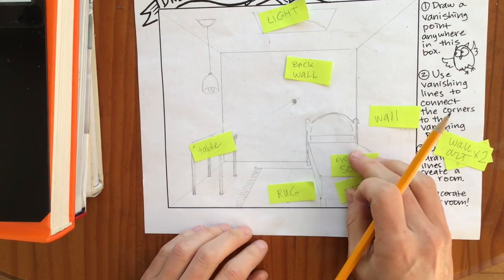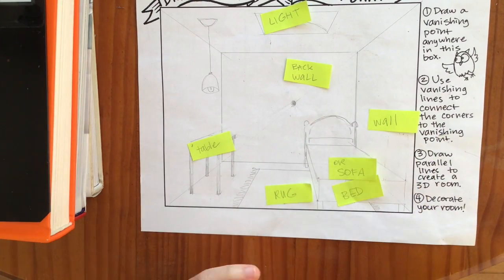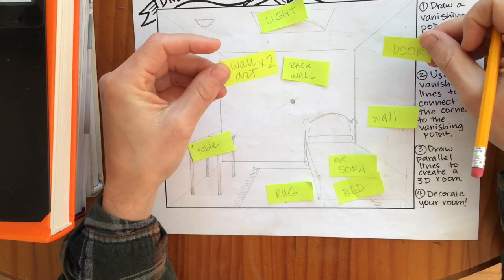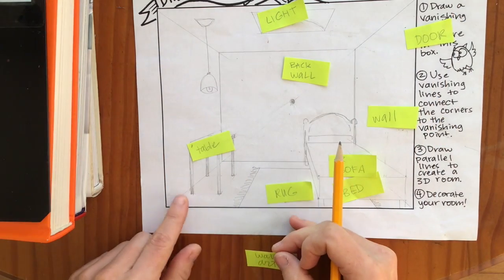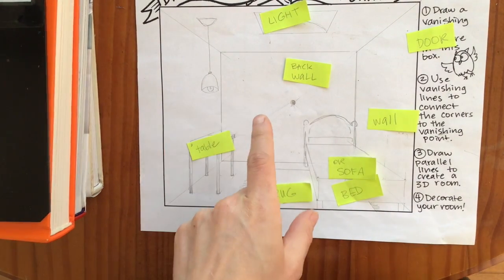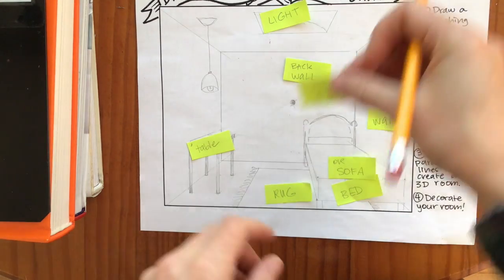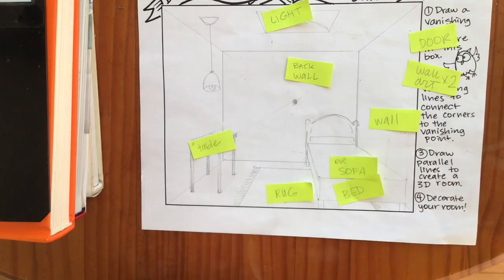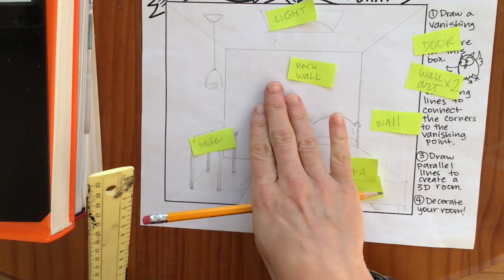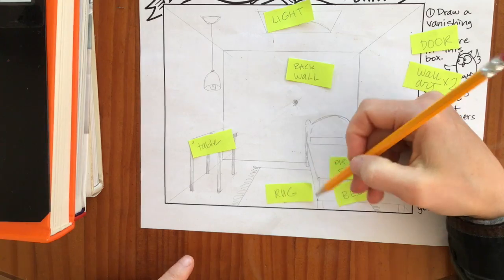Now I have the light. I have the sofa or bed. I have a rug. I have a table. I still need a door and some wall art. So there's a couple ways to do a door. If you want you could put a little bit of a door on this side right here or you can put a door on the back wall. Now if you put anything on the back wall you won't have to use the vanishing lines. What that means is if something is flat against the vanishing line you're not going to see any of the perspective.